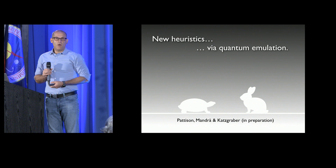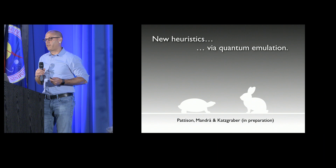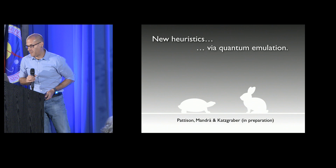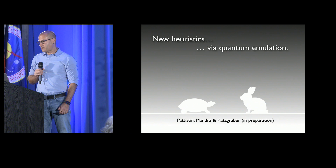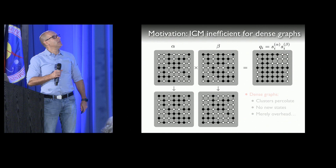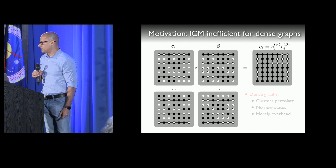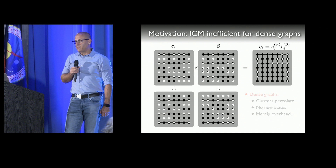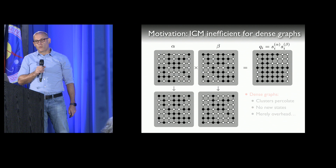Now I'd like to switch gears from improving sampling to making life harder for quantum annealing — developing new heuristics. We call this Quantum Inspired Tempering, or QuIT. I want to argue it's quantum emulation — I emphasize emulation, not simulation. The motivation was simple: looking at Houdayer cluster updates in PT plus ICM, if you have a dense graph with a low percolation threshold, the cluster updates become inefficient.